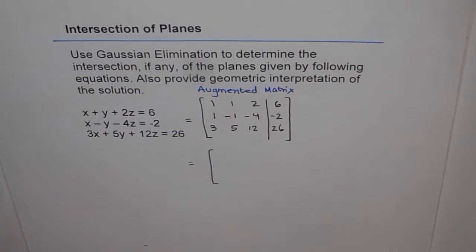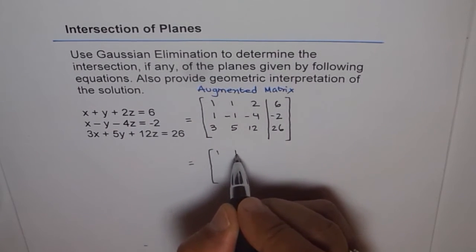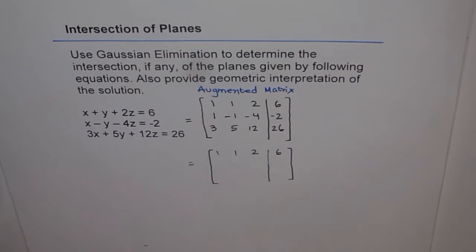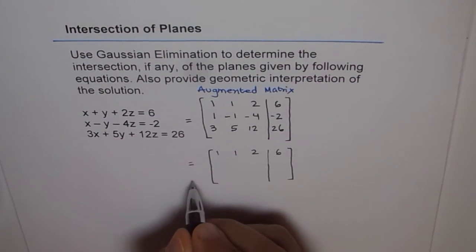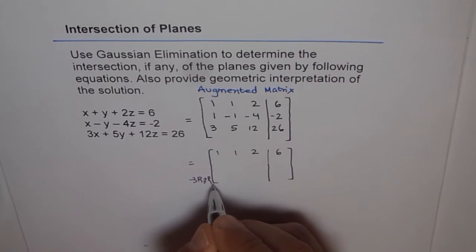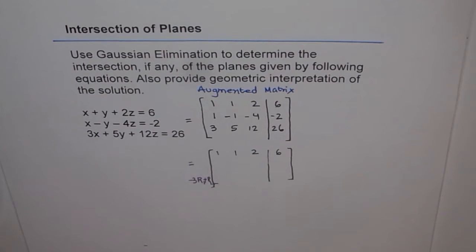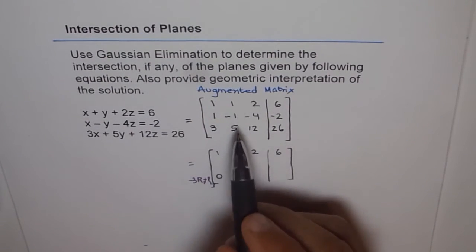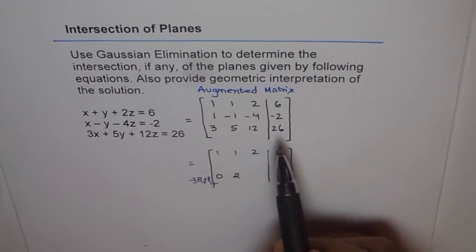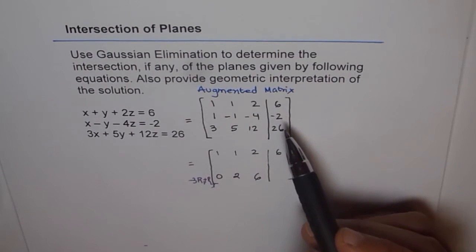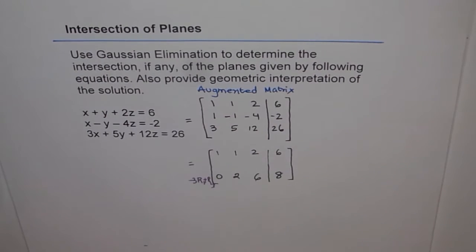I am doing minus 3 times R1 plus R3 to write down my third row. Minus 3 times 1 is minus 3, and minus 3 plus 3 gives 0. Minus 3 times 1 is minus 3, and minus 3 plus 5 gives 2. Minus 3 times 2 is minus 6, and minus 6 plus 12 gives 6. Minus 3 times 6 is minus 18, and minus 18 plus 26 gives plus 8. Normally we do each step separately, but I am combining steps to save space.